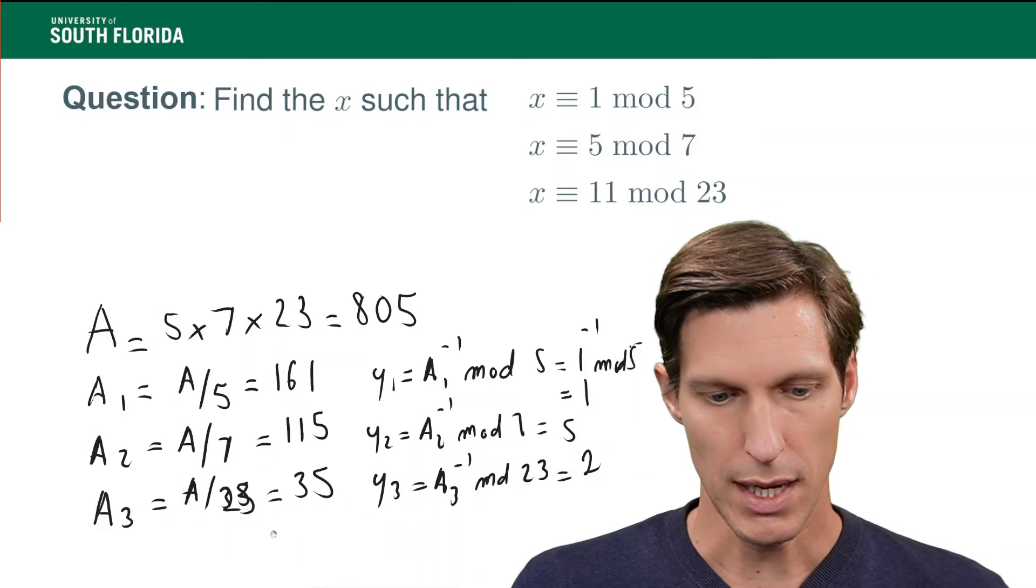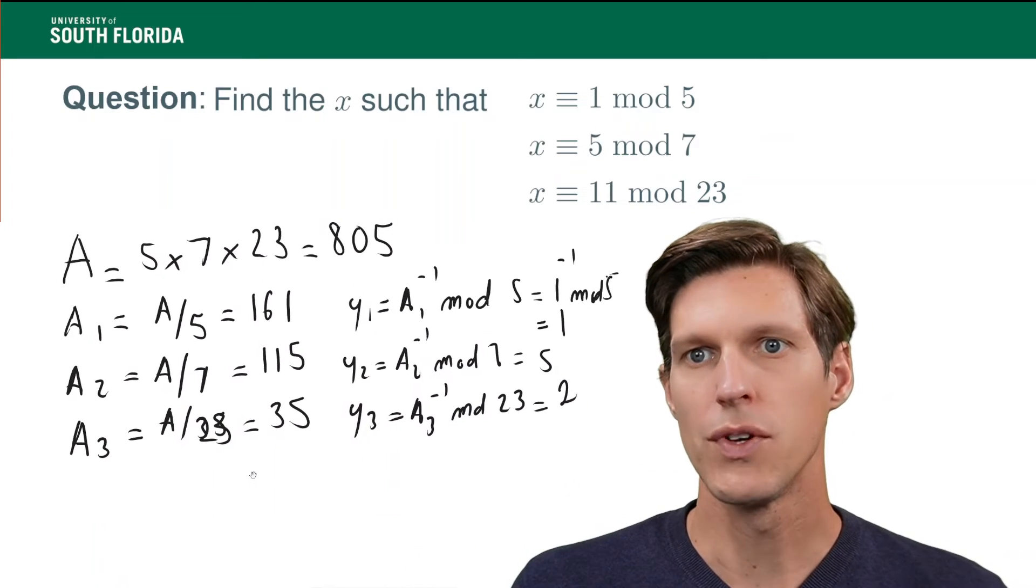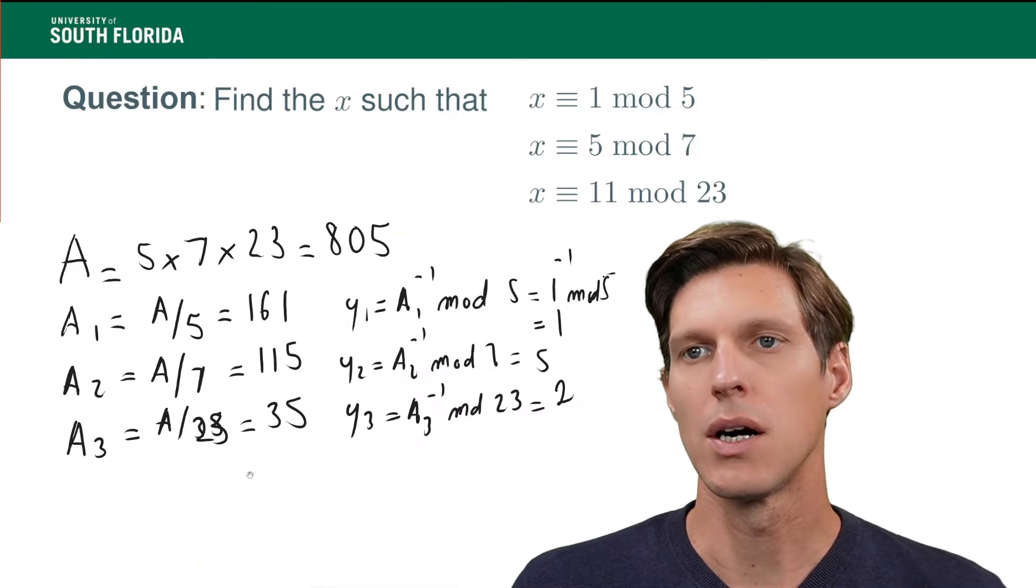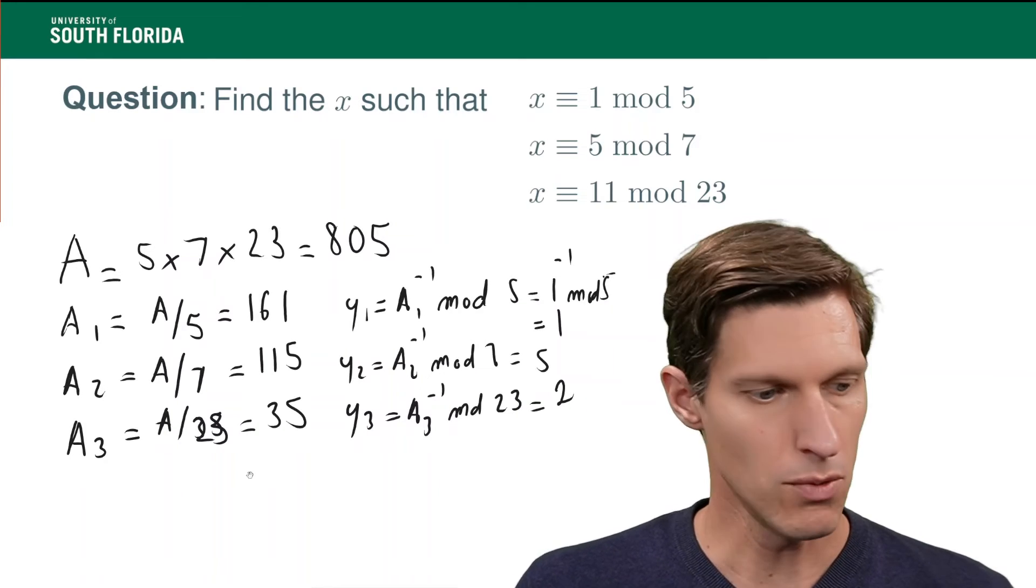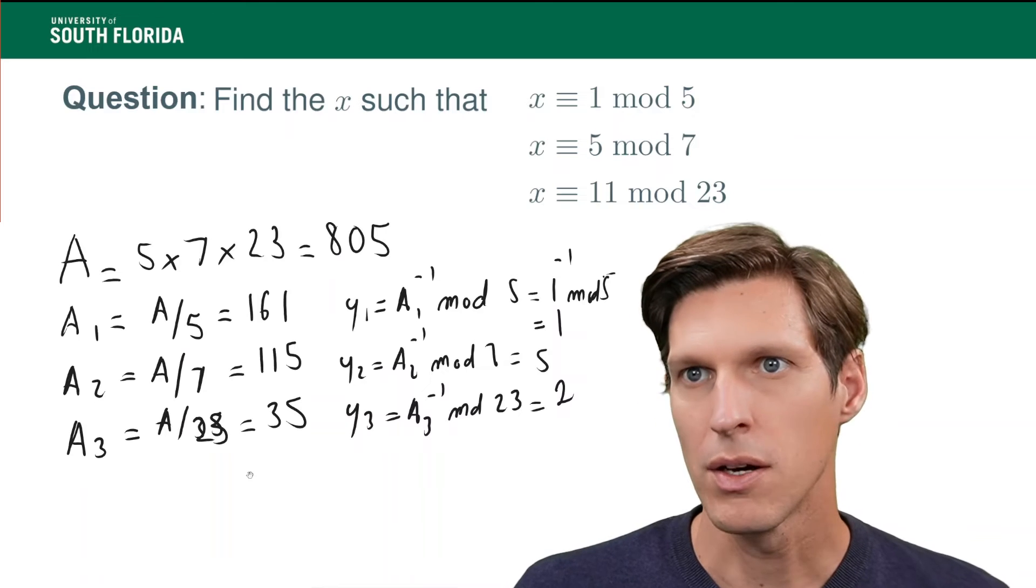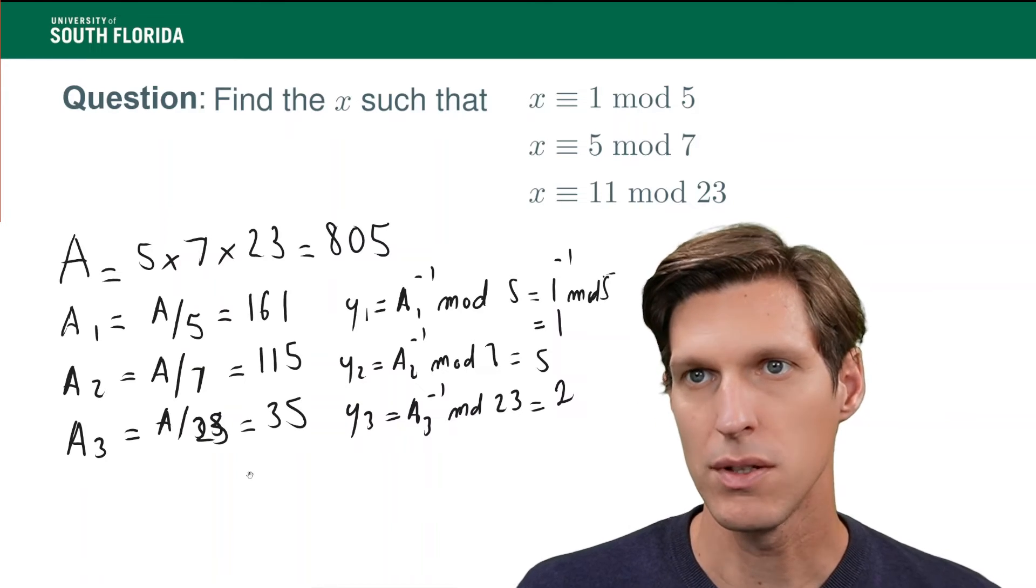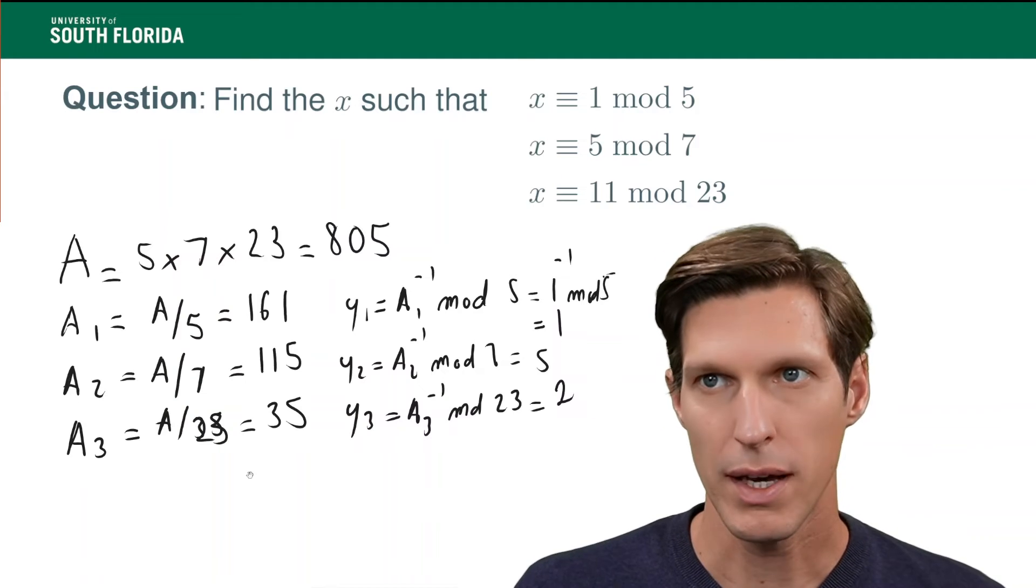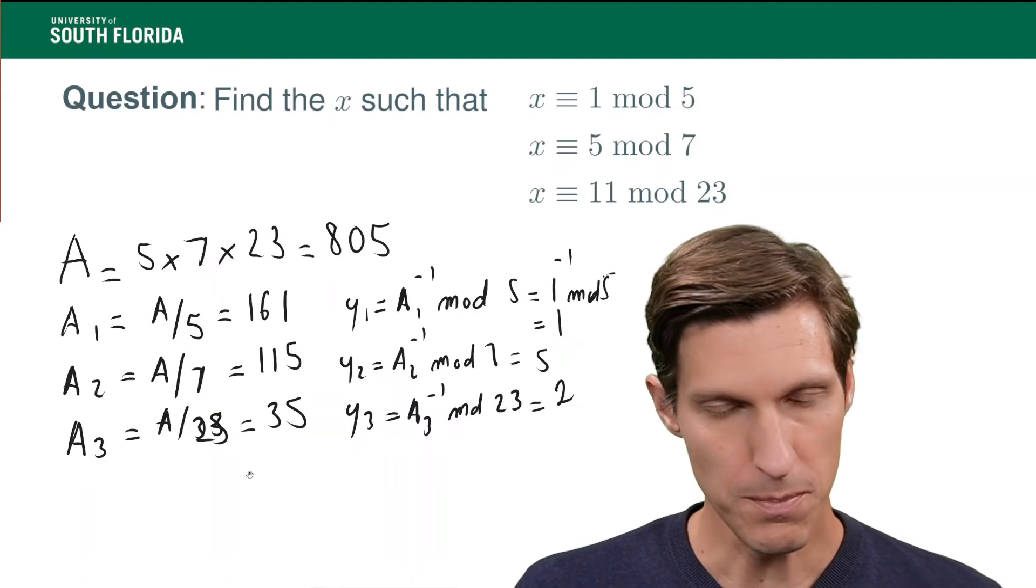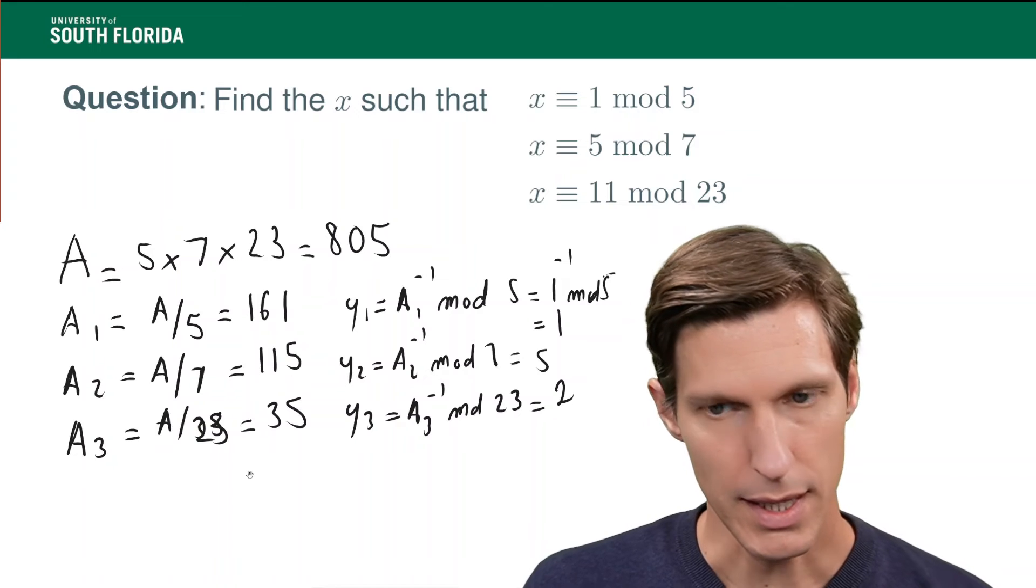So, now, I'm going to move things around a little bit here. So now, what I have is, I will call x1 1, x2 5, and x3 11. So, these are the values of x modulo 5, 7, and 23.